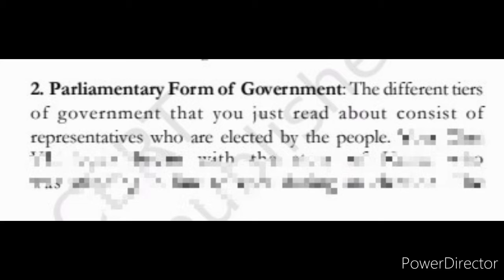The second feature of our Indian constitution is the parliamentary form of government. The different tiers of government consist of representatives who are elected by the people. People of India have a direct role in electing their representatives. Also, every citizen of the country, irrespective of his or her social background, can also contest in elections. These representatives are accountable to the people.